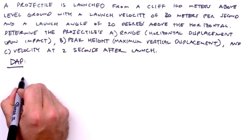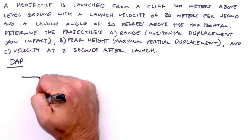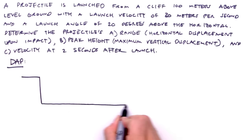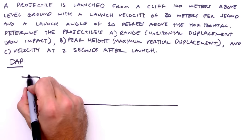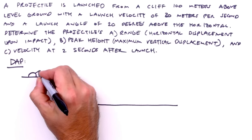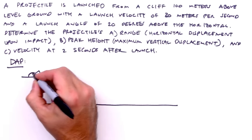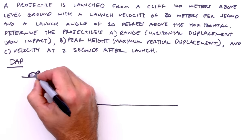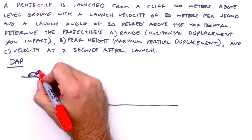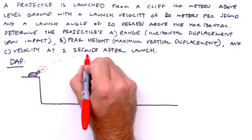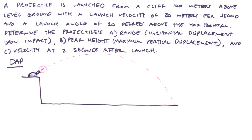So here's the cliff from which our projectile is launched, and here's the level ground below. We'll draw a cannon to fire the projectile and also to mark its initial position. And there's our trajectory. And we're done with the picture.